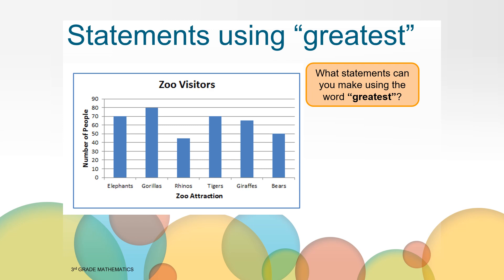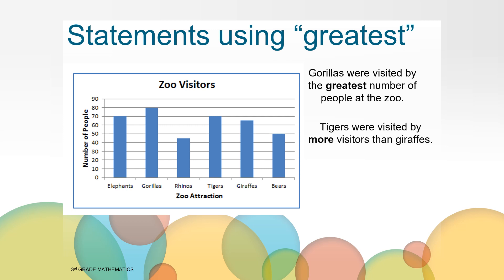Here are a couple of examples. You may have come up with something different, and that is all right. Gorillas were visited by the greatest number of people at the zoo. Another statement could be tigers were visited by more visitors than giraffes. Here's another one. Gorillas had a greater amount of people visit them than the elephants did. How did you do on your statement?